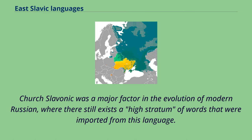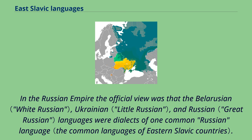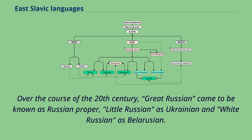Church Slavonic was a major factor in the evolution of modern Russian, where there still exists a high stratum of words imported from this language. All of these languages are today separate in their own right. In the Russian Empire, the official view was that Belarusian, Ukrainian, and Russian were dialects of one common Russian language. Over the course of the 20th century, Great Russian came to be known as Russian proper, Little Russian as Ukrainian, and White Russian as Belarusian.